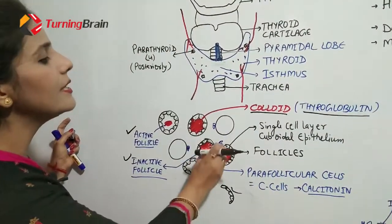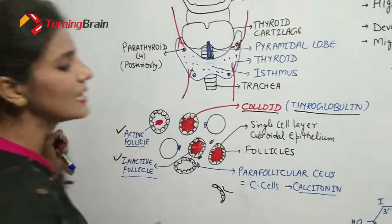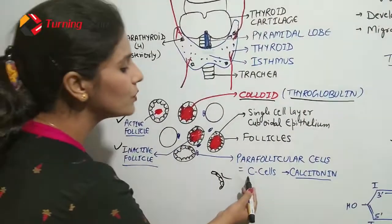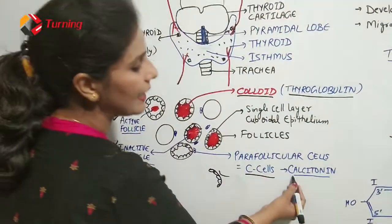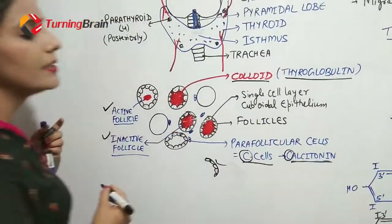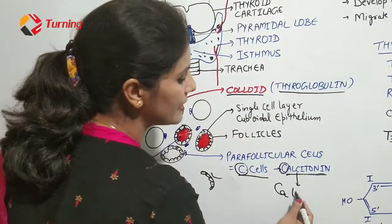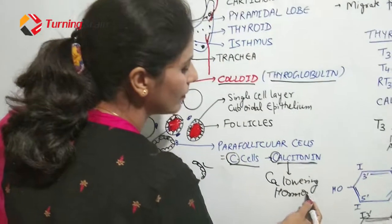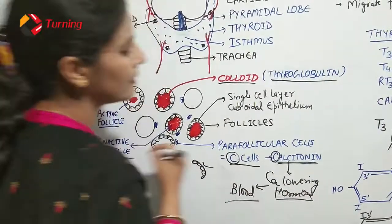In between the follicles there are different cells called parafollicular cells, also known as C cells. These are the second type of cells in the thyroid gland and they secrete a second type of hormone called calcitonin. Calcitonin is a calcium-lowering hormone — it reduces calcium levels in the blood.